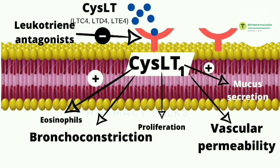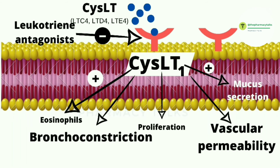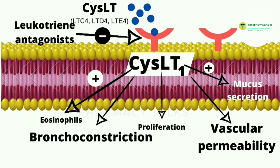The drugs belonging to this class are montelukast and zafirlukast. Both are very safe; the only side effects are headache and rashes. Cysteinyl-leukotriene 1 antagonists like montelukast are used in aspirin-induced asthma, but they are not used in COPD.